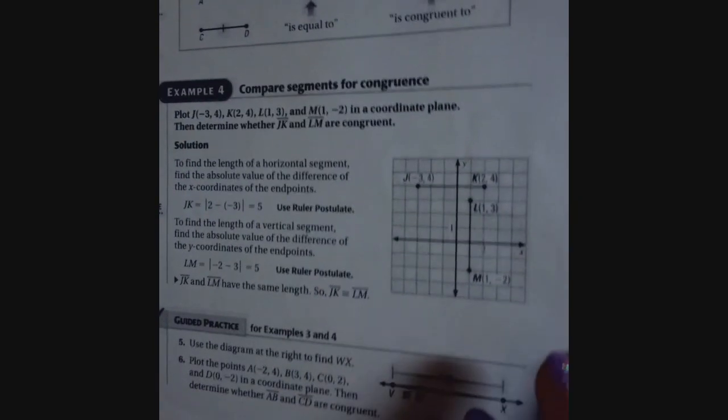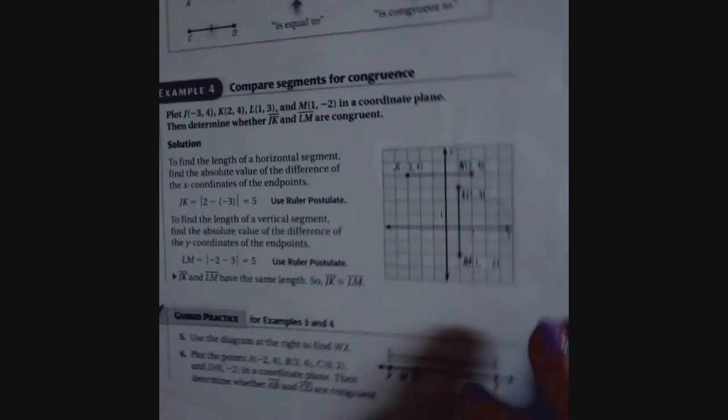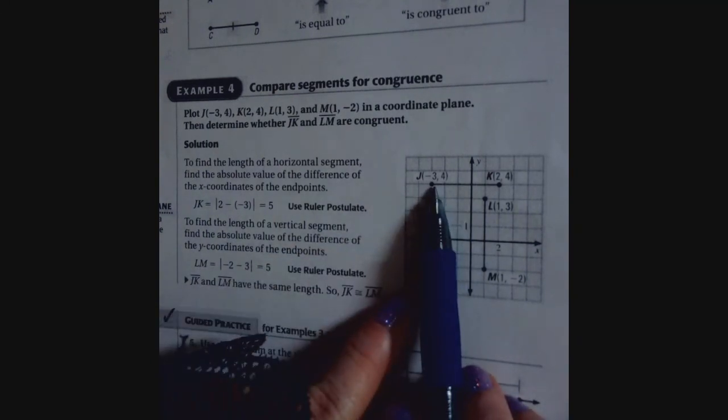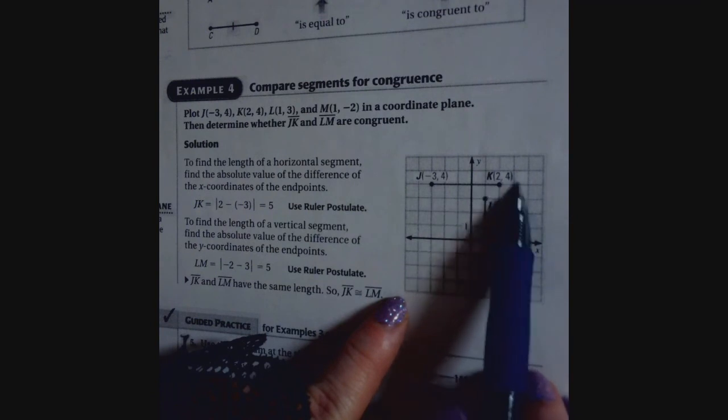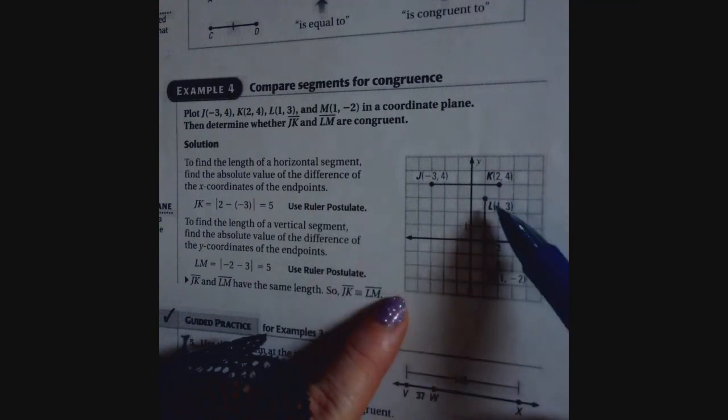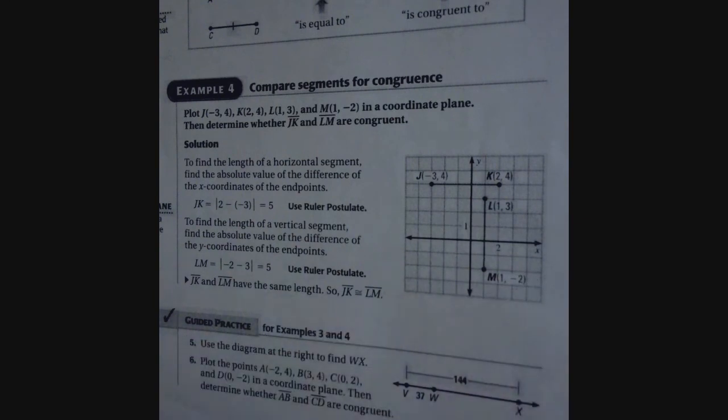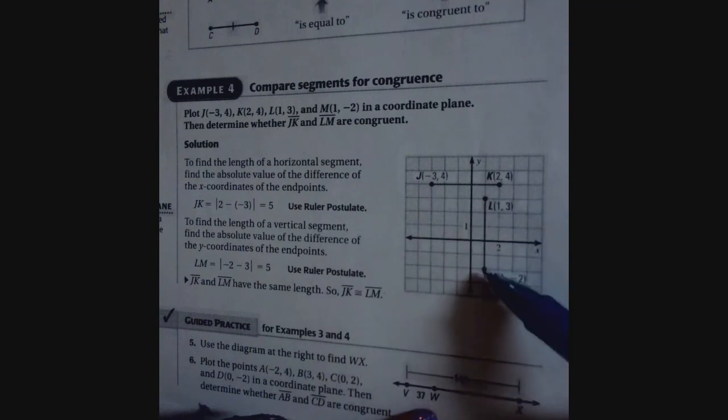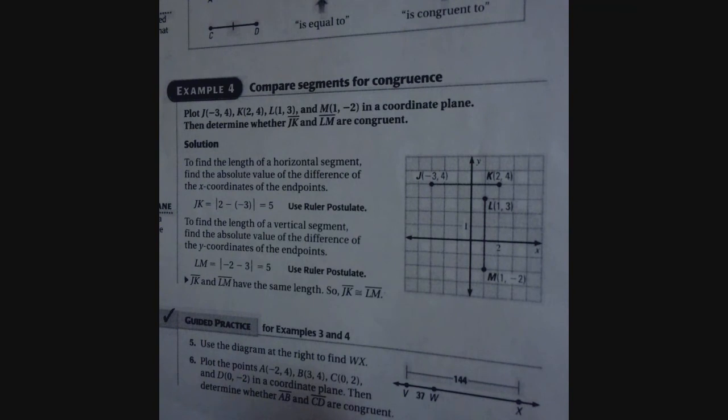Last example here. They've drawn lines. So they've plotted it for you. That's why you're going to need graphing paper too. So plot J, which is at negative 3, 4, and K, which is at 2, 4. So here you can see that you have a horizontal line going like this. Then you have L, which is at 1, 3, and M, which is at 1, negative 2. Then determine whether, again, they're segments. The segment JK and LM are congruent. So congruency means they must be exactly the same length. So of course you can look and you can count. I'm not saying you can't do that, but that's not always going to be feasible. So we're going to show how to do the ruler postulate.